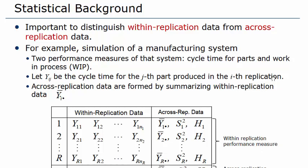Cycle time for the parts is the time from release into the factory until completion, whereas work in process is the total number of parts in the factory at any time. For computer applications, these two measures could correspond to the response time and the number of requests in queue; in a supply chain application they could be the order fill time and the inventory level.